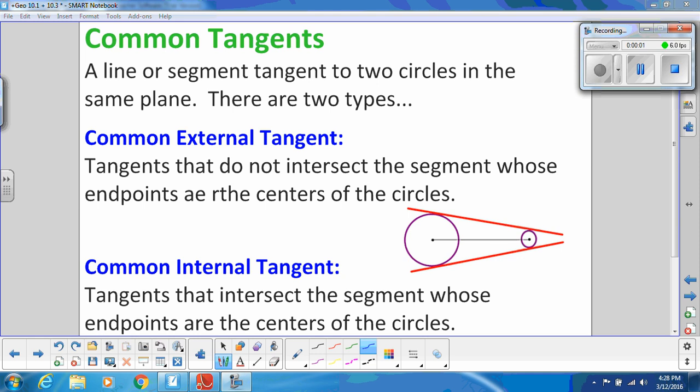We're going to be talking about tangent lines and how they relate to circles. First, we need to discuss common tangents, and that's simply a line or a segment tangent to two circles in the same plane.